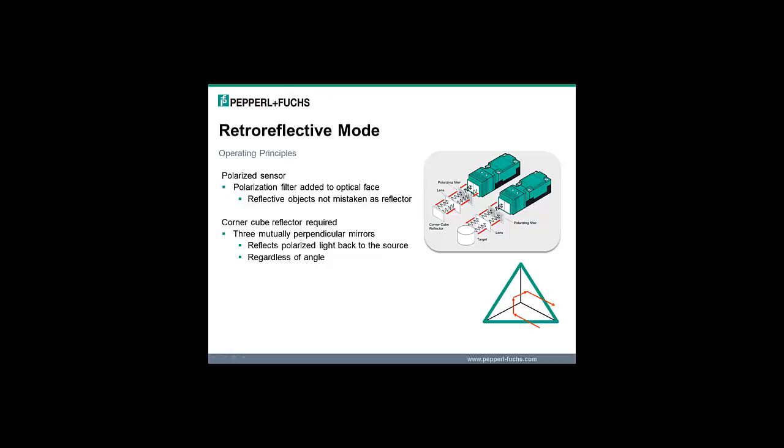Nearly all modern retroreflective sensors are polarized. Using the same concept manufacturers of sunglasses use to lessen the harmful effects of ultraviolet light, polarized retroreflective sensors have a horizontal polarization filter added to the sensor's optical face. The goal is to ensure that very reflective, mirror-like objects are not mistaken as the reflector. The process requires that a horizontal pole filter be placed over the emitter and a vertical pole filter be placed over the receiver — so that shiny surfaces, like a shiny aluminum can, are not mistaken for the reflector.